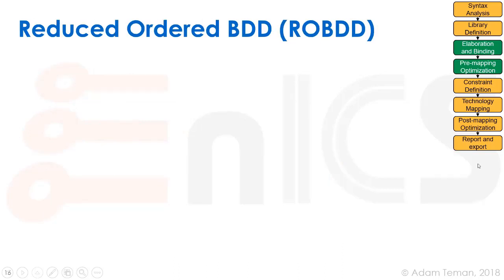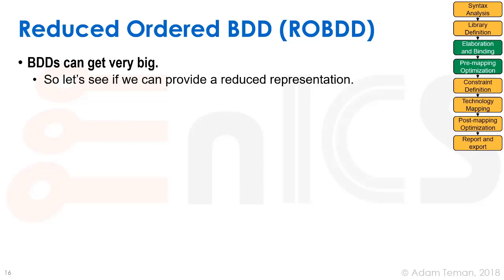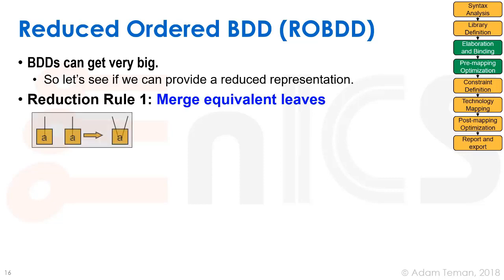There is a problem with BDDs — they can get very big. With n variables, a BDD can have 2 to the power of n nodes. We want to reduce this representation. Using three simple reduction rules, we can arrive at something called a reduced order BDD, allowing us to throw away a lot of those nodes.